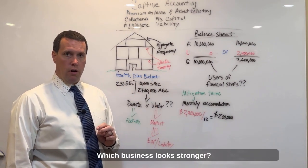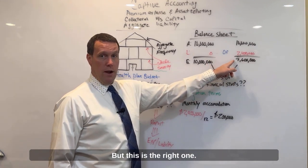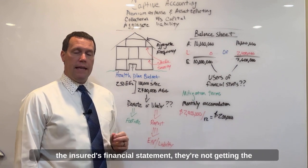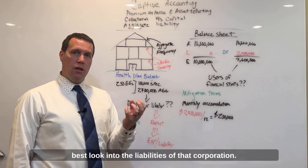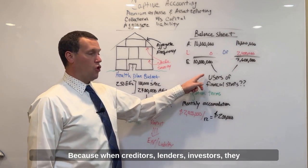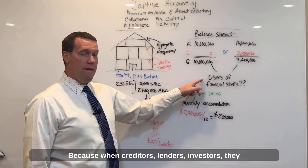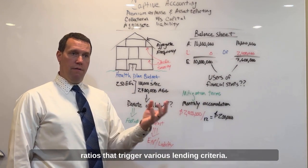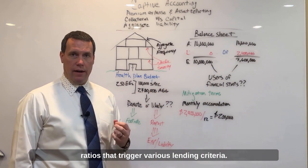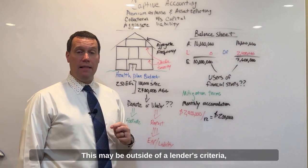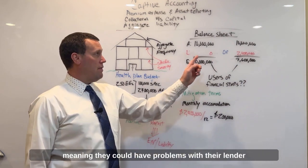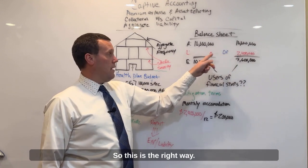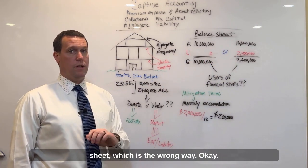Which business looks stronger? Well, of course, this one — but this is the right one. Why that's important is because the users of the insured's financial statement are not getting the best look into the liabilities of that corporation. When creditors, lenders, and investors have certain ratios — debt-to-equity ratios — that trigger various lending criteria, this may be outside of a lender's criteria, meaning they could have problems with their lender if they don't properly report that liability. So this is the right way; this is an overstatement of your balance sheet, which is the wrong way.